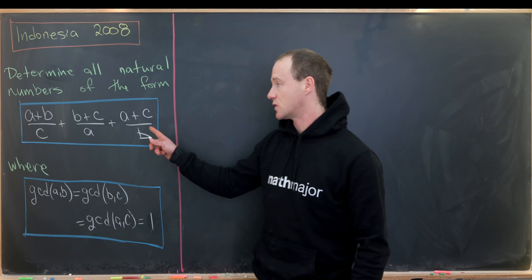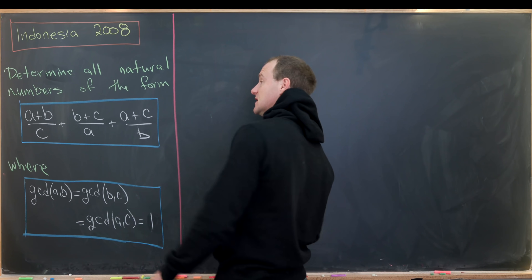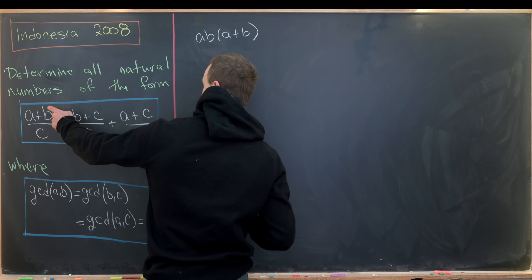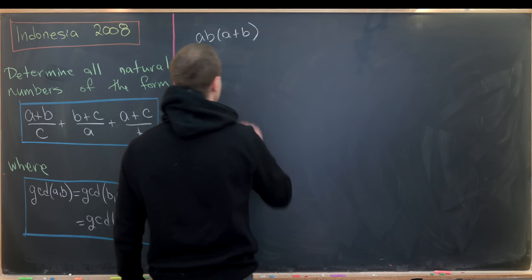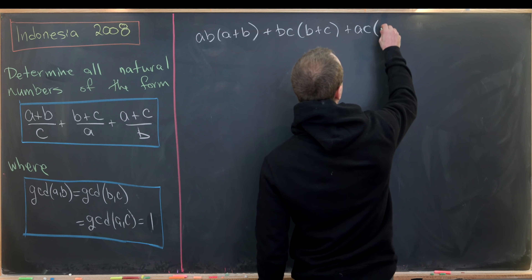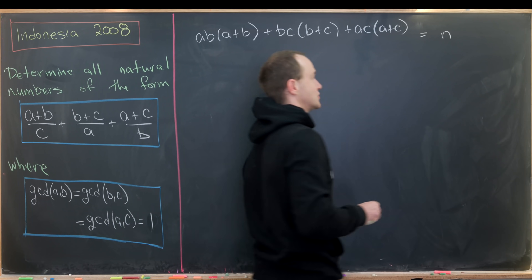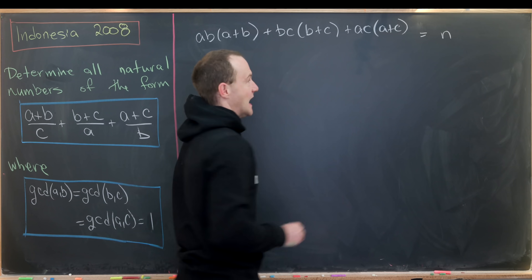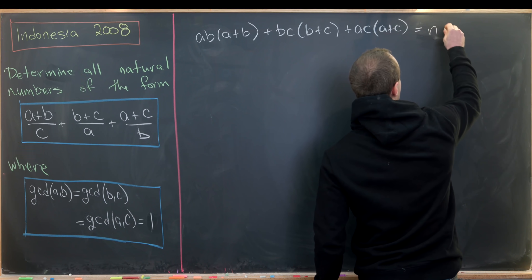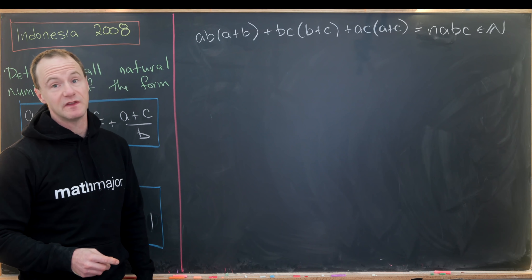The first thing I want to do is smash this whole thing together by finding a common denominator. The common denominator will be A times B times C, giving us A·B·(A+B) + B·C·(B+C) + A·C·(A+C), all over A·B·C, equal to some natural number N. Instead of keeping that denominator, I'll multiply A·B·C to the other side, so we have this expression equal to N·A·B·C, working entirely within the natural numbers.